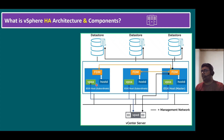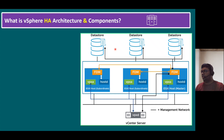At that point, vSphere HA automatically migrates the virtual machines to another ESXi host and restarts them — that is the minimal downtime involved. The main vSphere HA architectural components are ESXi hosts, shared datastore, management network, and agent services. In this diagram, black lines represent the management network and blue lines represent agent communications.